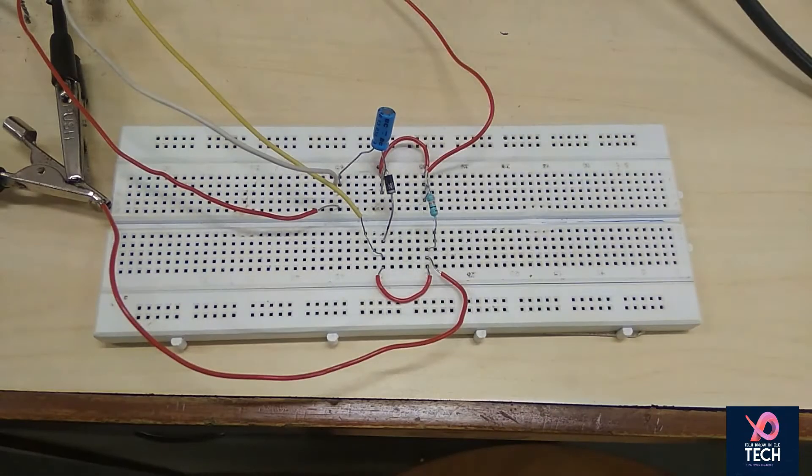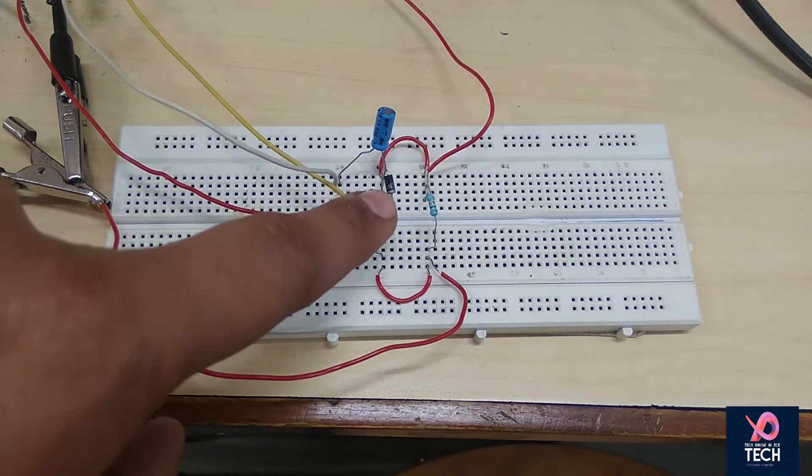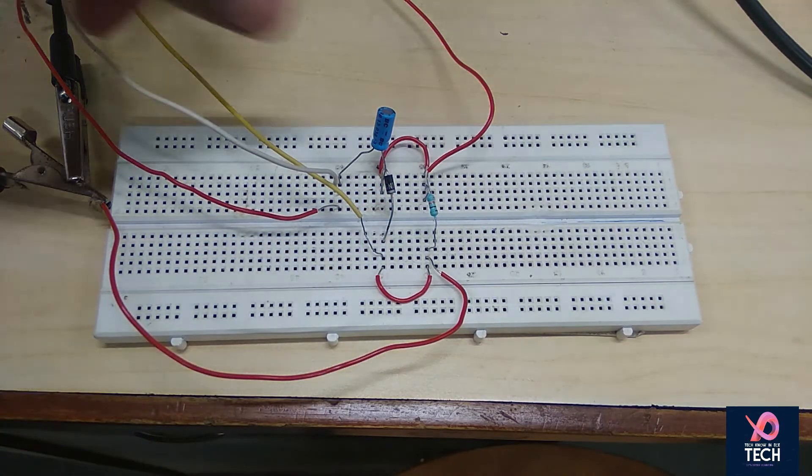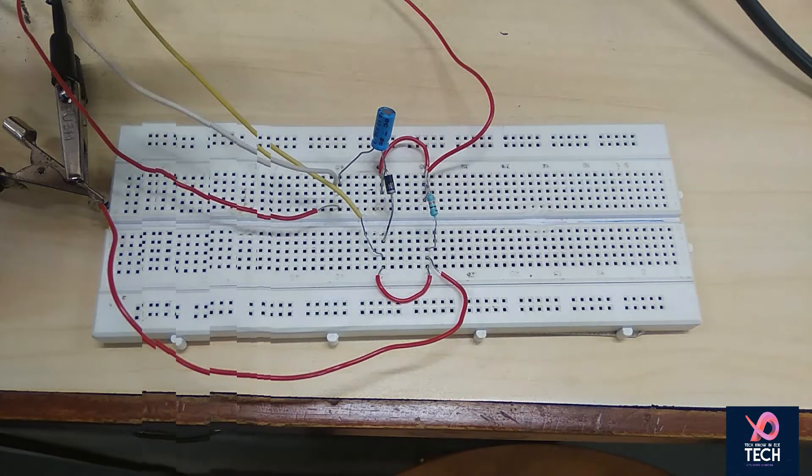So now I will be showing you how you are actually going to perform this practical. So here this is your diode, PN diode. I have grounded this so that I can level both inputs as well as outputs.